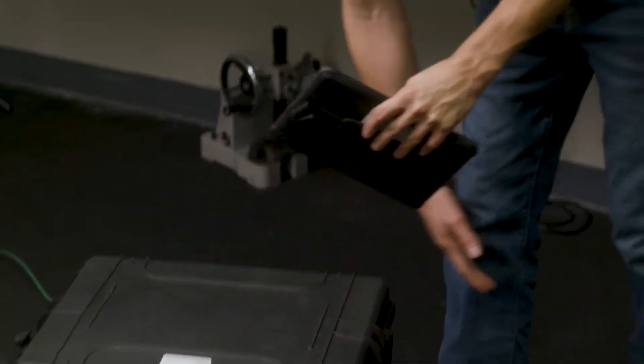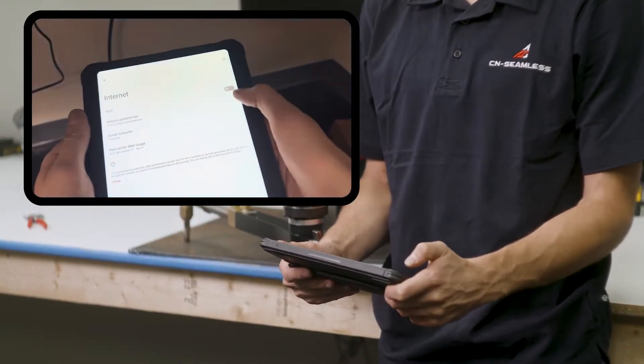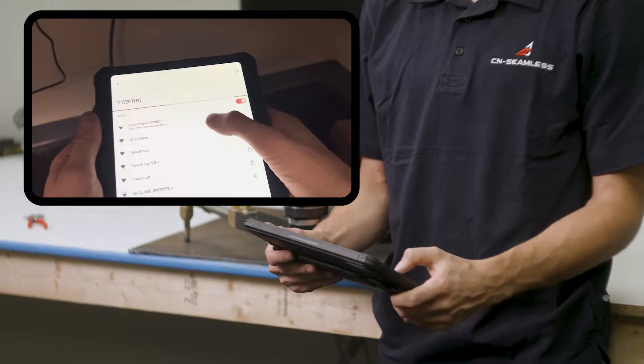Next you're going to want to grab your tablet out of the case. And when you first turn it on, it's not going to be connected to the machine. So click on this button right here, click on the Wi-Fi icon, and then select the network name, CNSeamless- whatever number your machine is.